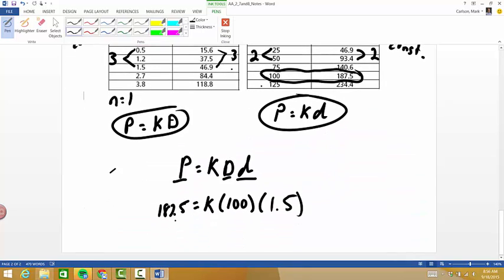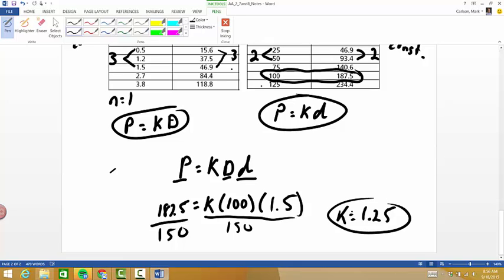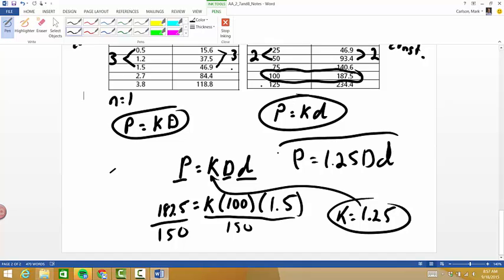So if that's the case, I'm going to plug those values into my general equation and solve for k. So if I do that, I'm going to need to divide both sides by 150 because 100 times 1.5 would be 150. So if I do that, 187.5 divided by 150, that would leave me with a k value of 1.25 if I do that on my calculator. Therefore, I can plug this now back into this equation to get a specific equation here which would be P equals 1.25 density times depth. That would be a specific equation for that situation.